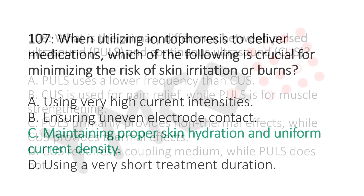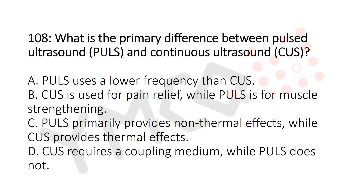Question number 108: What is the primary difference between pulsed ultrasound (PUS) and continuous ultrasound (CUS)? Option A: PUS uses lower frequency than CUS. Option B: CUS is used for pain relief while PUS is for muscle strengthening. Option C: PUS primarily provides non-thermal effects while CUS provides thermal effects. Option D: CUS requires a coupling medium while PUS does not.